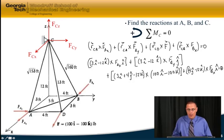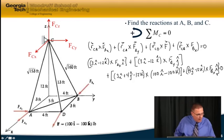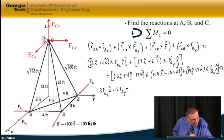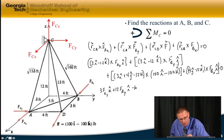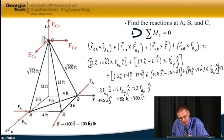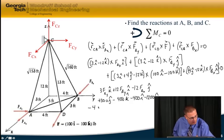Now if you do those cross products in the mathematics, what you'll come out with for your moment equation is three F_AY in the K direction, plus 12 F_AY in the I direction, minus 12 F_AX in the J direction, plus 300 J, minus 400 K, minus 400 I, minus 1200 J, minus 4 F_BX K, minus 12 F_BX J.